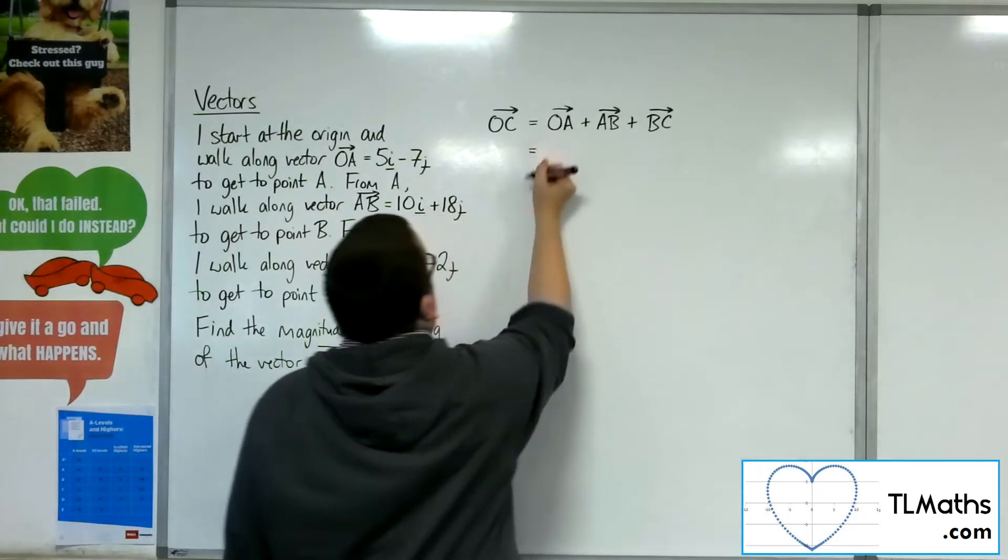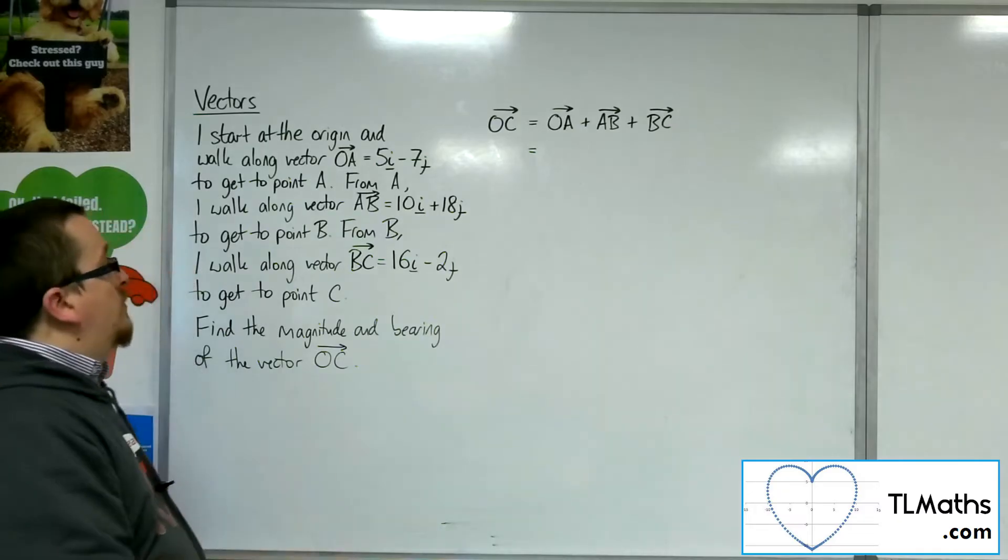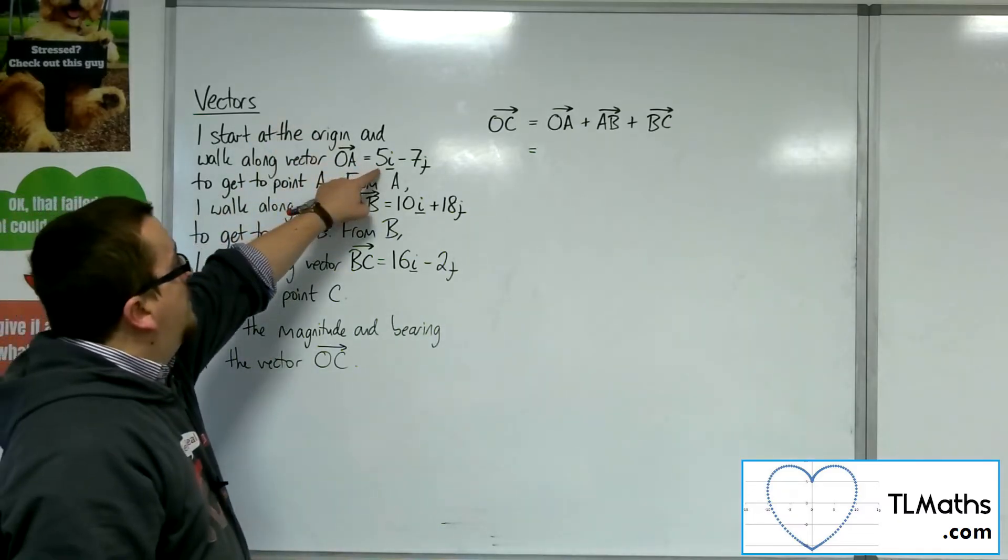Plus BC, and that will get me from the origin to C. So it's really just the sum, the resultant vector, of those three that I've got here.